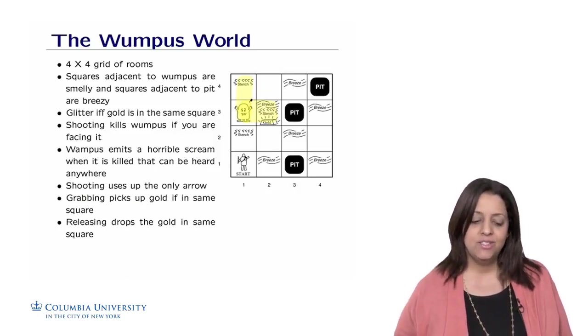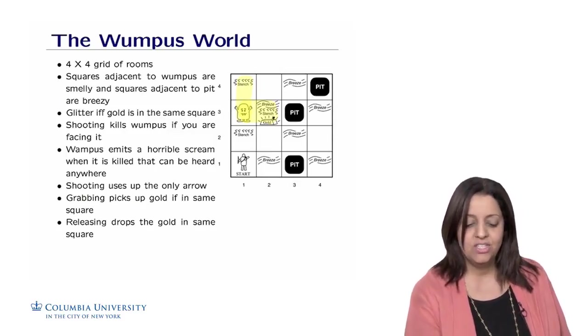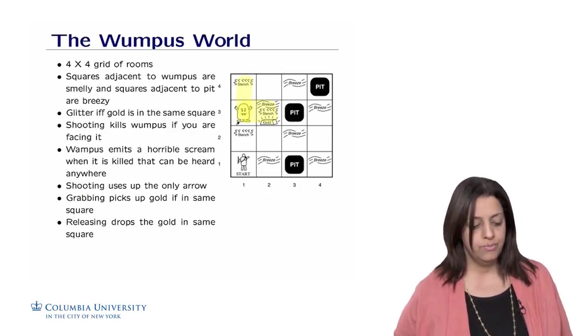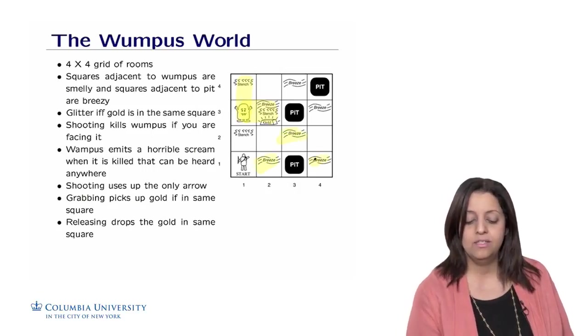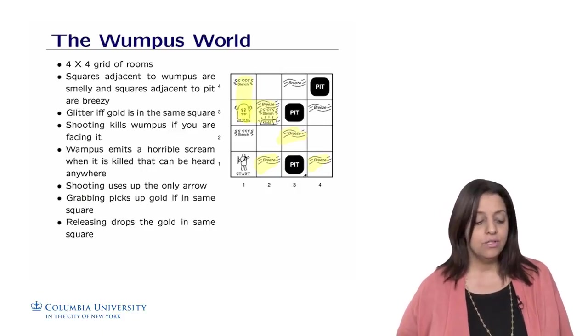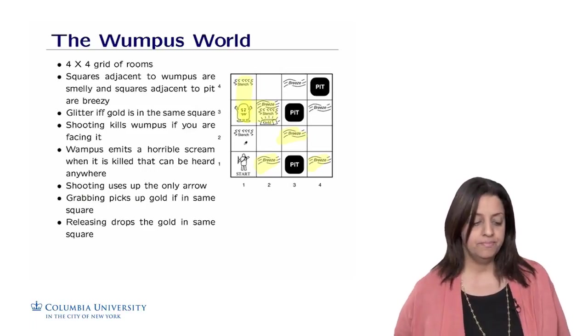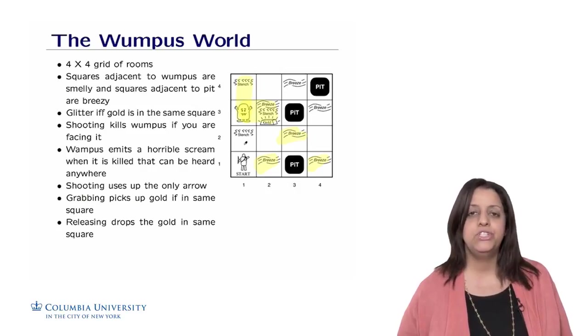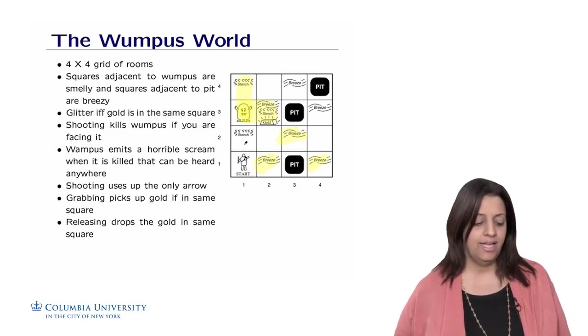Squares that are adjacent to a Wumpus have some stench. So we have a stench here, here, and here because the cells are close to a Wumpus. Rooms that are close to a pit have some breeze. There is some glitter if and only if there is gold in the room. Shooting the Wumpus with the only available arrow will kill the Wumpus, in which case it will emit a very big scream that can be heard anywhere in the cave.